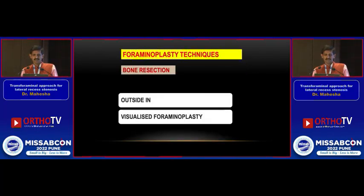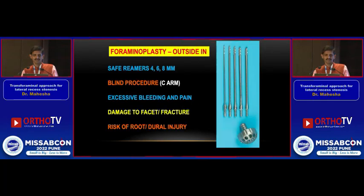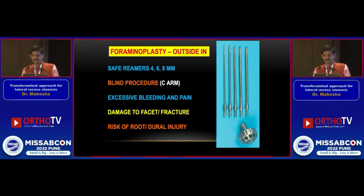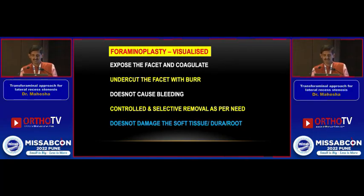This can be done with two techniques: either outside-in or visualized foramenoplasty. I do not prefer the outside-in technique because it is a blind procedure, it requires radiation, there is more bleeding, more pain, and sometimes you can damage the facet. There is always a risk of injuring the root or the dura. So I always do a visualized foramenoplasty. We undercut the facet using a burr. This does not cause bleeding and the amount of facet resection is minimal because you can do a controlled resection. The risk of dural injury is negligible.